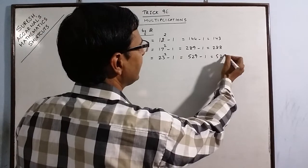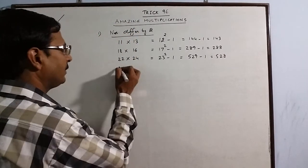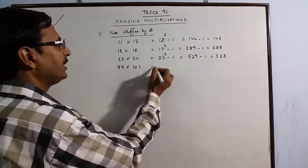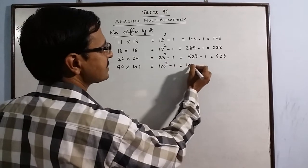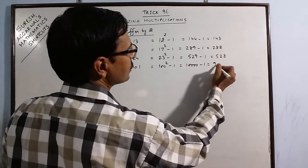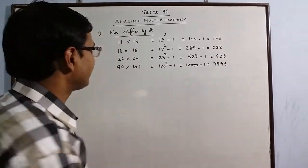Likewise you can go on and on and find many more products like 99 into 101. Intermediate number is 100, so 100 square minus 1. This is 10,000 minus 1: 9,999. Isn't that amazing?